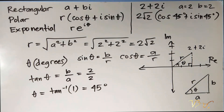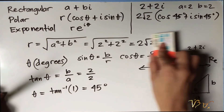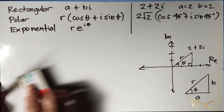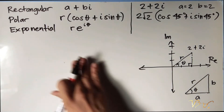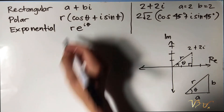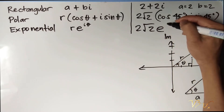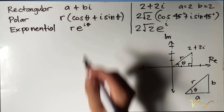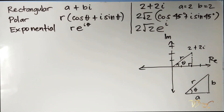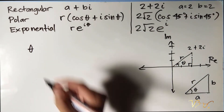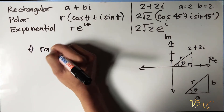But how do we transform it into its exponential form? If you observe, we are using r and theta also. So we copy it: r is 2 square root of 2 times e raised to i times theta. But this time theta is outside of a trigonometric function, so theta for exponential form should be in radian form.